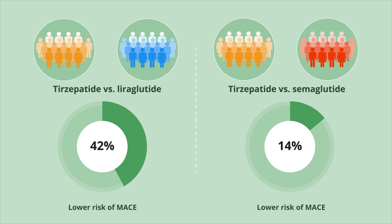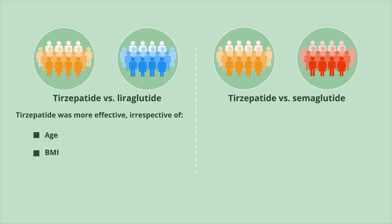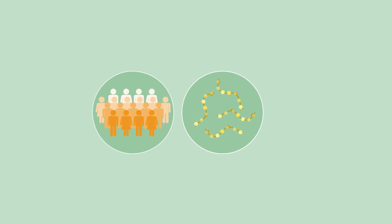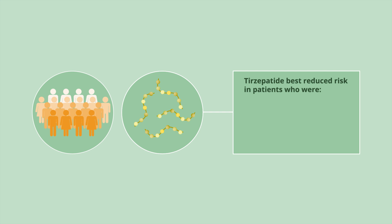When comparing trisepatide to loraglutide, trisepatide was more effective overall irrespective of age, BMI, sex, ethnicity, adherence rates, or geographic location. When comparing trisepatide to semaglutide, trisepatide offered improved benefit in patients who were younger — less than 60 years old — white, obese with a BMI over 30, and adherent to therapy. When analyzing the cohorts together, trisepatide appeared to be more effective in reducing major adverse cardiovascular events in younger, under 60 years old, white, and male patients.